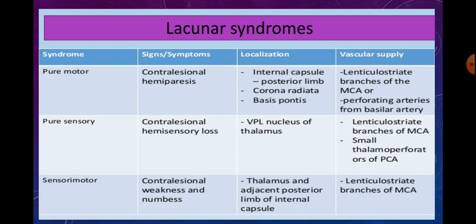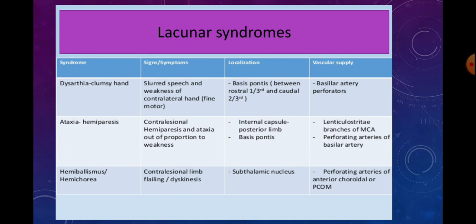Sensory-motor syndrome involves contralateral weakness as well as numbness — basically a mixture of pure motor and pure sensory. The localization is the thalamus and adjacent posterior limb of the internal capsule, and the vascular supply is lenticulostriate branches of the MCA.